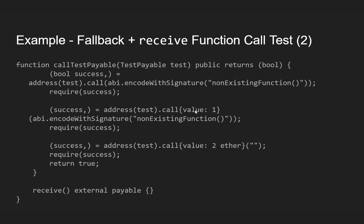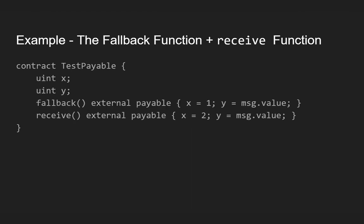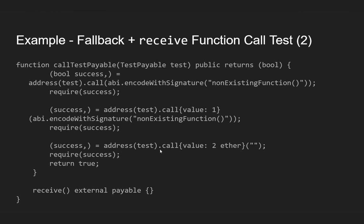The second example is almost the same, but this time we also send a dynamic value of one wei — the smallest sub-denomination of ether. We still use call data in the parentheses, so the fallback function is triggered again. Value one is assigned to state variable x, and this time one wei is assigned to state variable y.